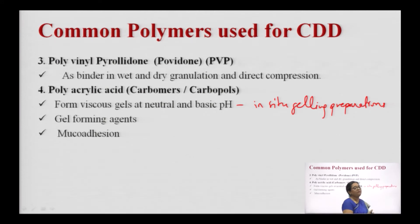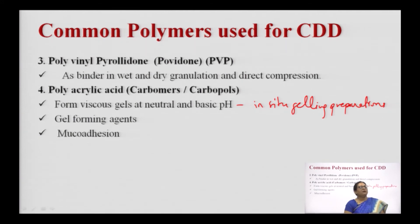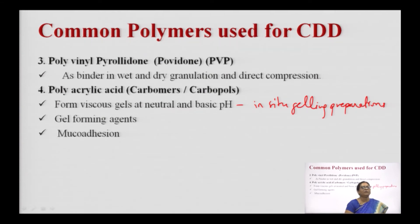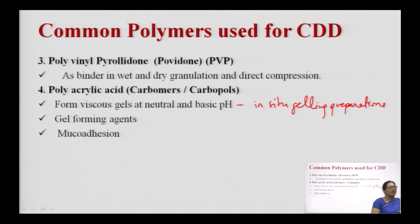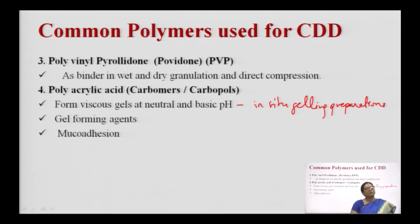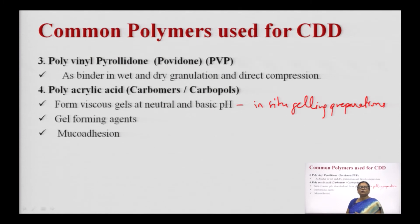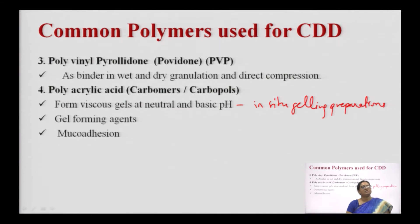Ophthalmic preparations have been prepared using carbomers. Ophthalmic drops instilled in the eyes in liquid form immediately gel at the pH of the eye. Carbomer has also been used as a gel-forming agent. Another important property of carbomers is mucoadhesion, which has led to its use in mucoadhesive or buccoadhesive formulations. It can adhere to mucosal surfaces, increasing the residence time and improving the efficiency of drug delivery from a controlled drug delivery system.